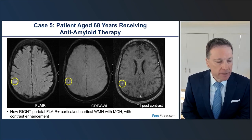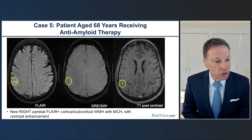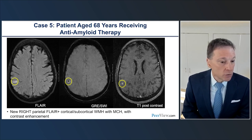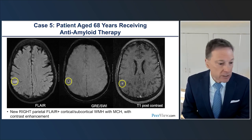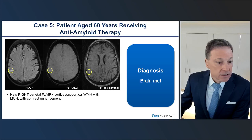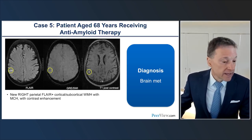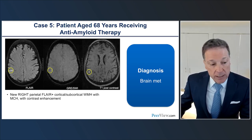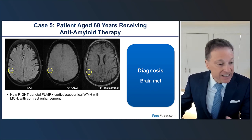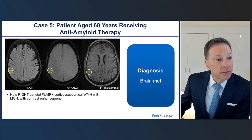Fifth case: a 68-year-old patient on anti-amyloid therapy presenting for routine surveillance. T2 FLAIR shows a new area of subcortical signal abnormality. The GRE scan shows a new lobar microhemorrhage compared to baseline. Gadolinium reveals an associated focus of contrast enhancement corresponding to this finding — the giveaway that this is a metastatic focus, not ARIA. ARIA-E and ARIA-H do not demonstrate associated contrast enhancement. ARIA-E is a vasogenic process, not cytotoxic, so diffusion-weighted imaging should also be negative.